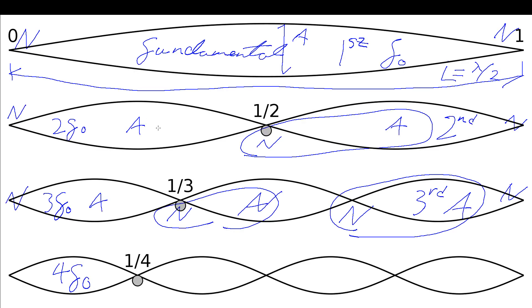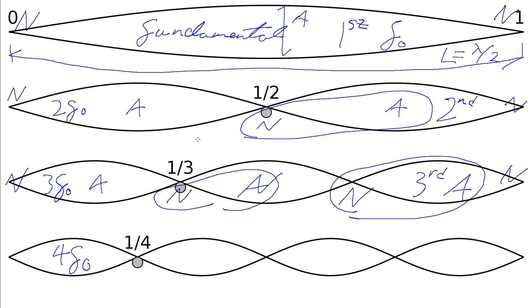By recognizing and predicting these patterns, we can predict the frequencies that can be set up on a string. When you pluck a string on a typical string instrument, you primarily get the fundamental mode, but you also get small amounts of higher harmonics to various degrees. That's what gives a musical instrument depth to its sound — the fundamental mode plus additional harmonics layered on top, rather than just a single pure sine wave, which sounds quite shallow.